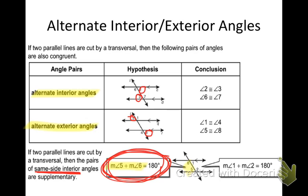Same side interior angles are actually supplementary, which means they add up to 180. Corresponding angles — congruent. Alternate interior — congruent. Alternate exterior — congruent. Same side interior — supplementary.